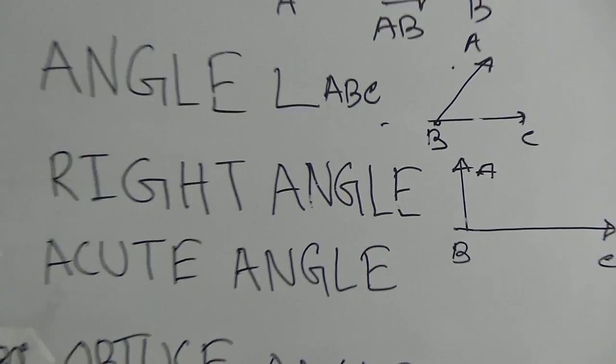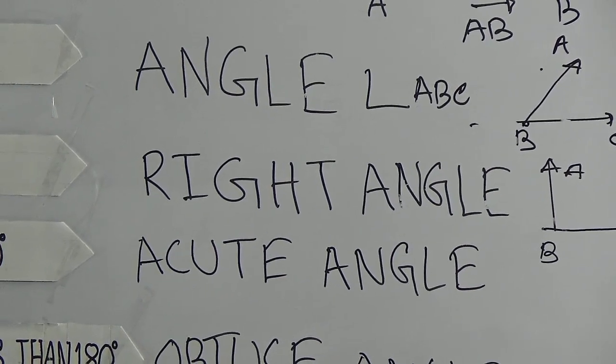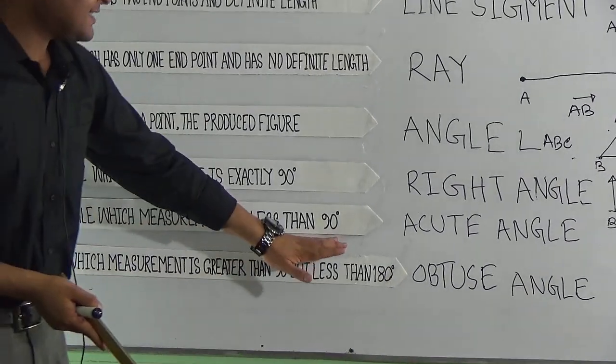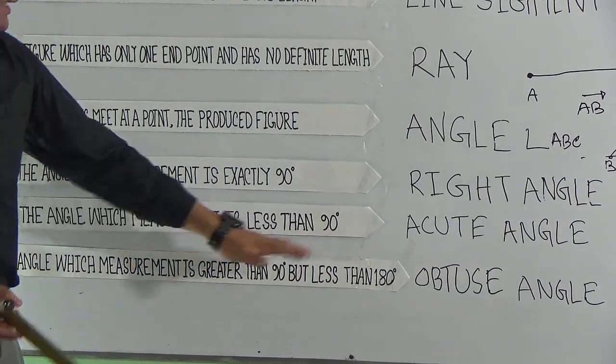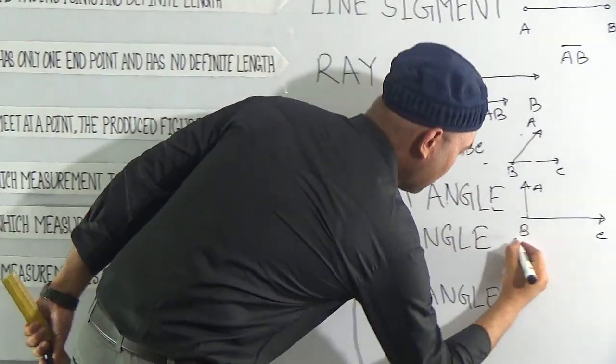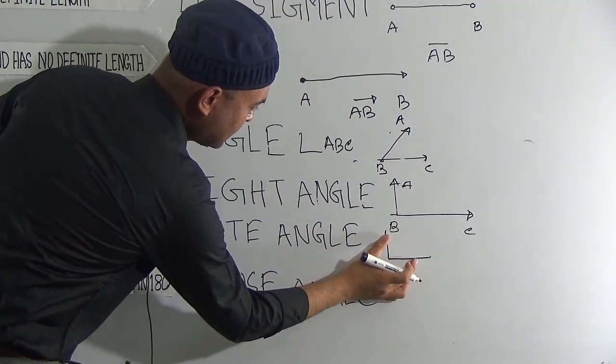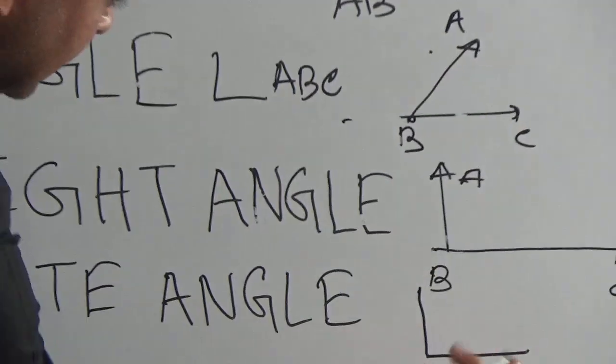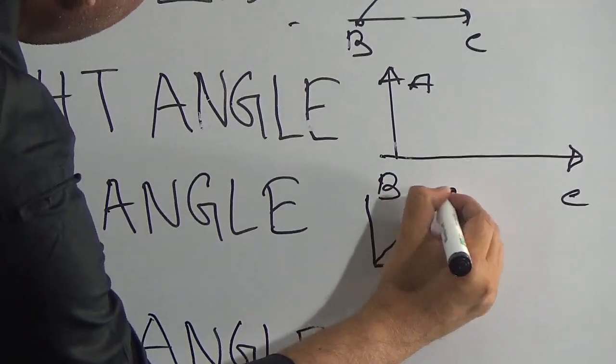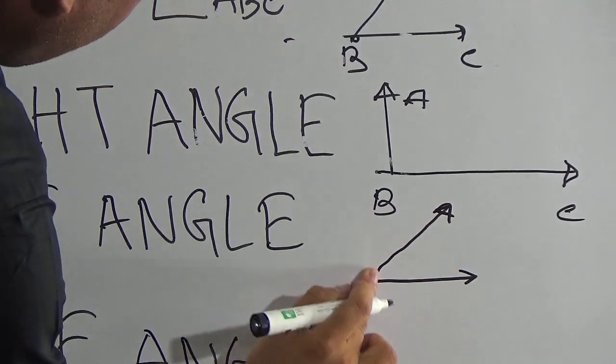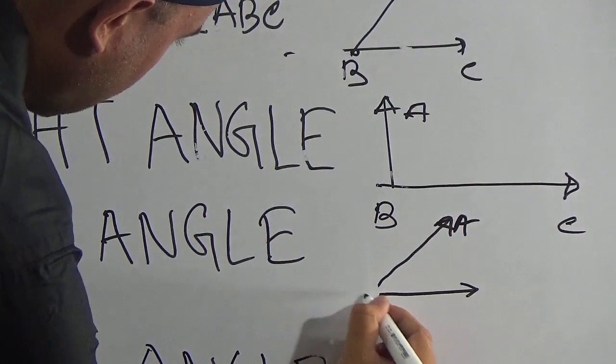Next one is acute angle. Acute angle means the angle which measurement is less than 90 degrees. We have seen that this is a right angle. Less than means belongs to this area. If we consider a ray this and this, it will be an acute angle.